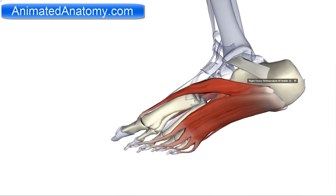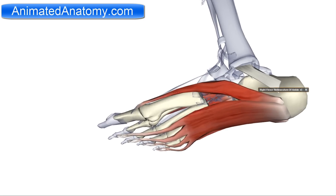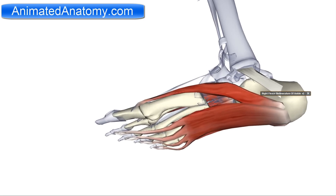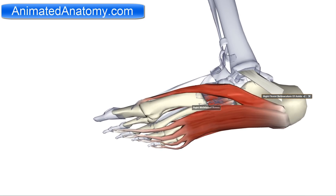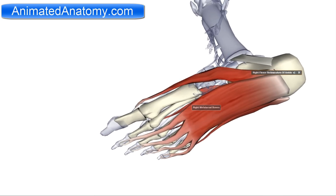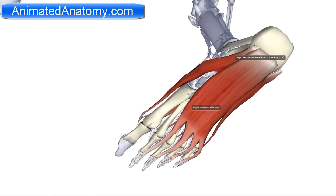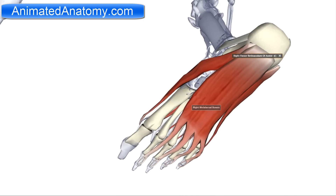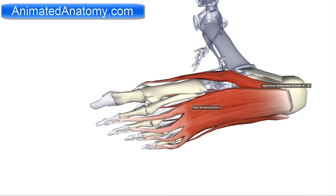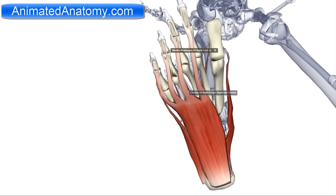The abductor hallucis is innervated by the plantar nerve, and it serves for the abduction of the hallux. The flexor digitorum brevis also originates from the plantar aponeurosis and the calcaneus bone. It inserts in the middle phalanges of the lateral four toes of the foot, and its function is to flex those lateral toes.